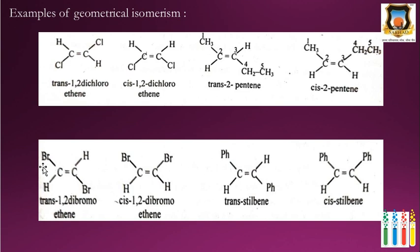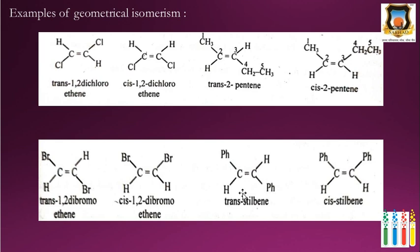In the next compound, the two bromines and the two hydrogens are on opposite sides of the carbon-carbon double bond, so it is the trans isomer: trans-1,2-dibromoethene. When the two bromines are on the same side, it is cis-1,2-dibromoethene. In trans-stilbene, the two phenyl rings and the two hydrogens are on opposite sides of the double bond, making it trans-stilbene. When the two phenyl groups are on the same side, it is cis-stilbene.